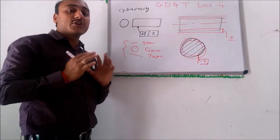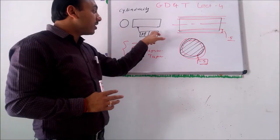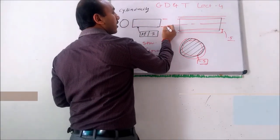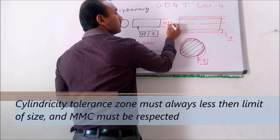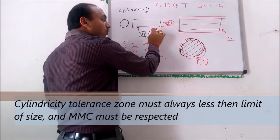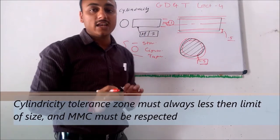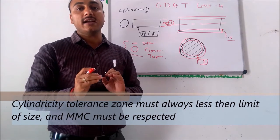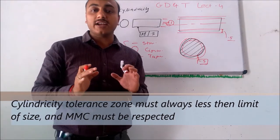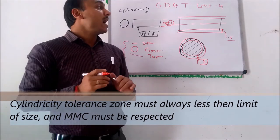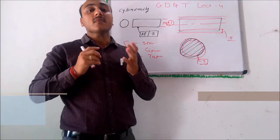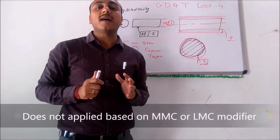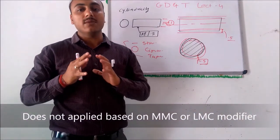Remember that in circularity or cylindricity, the tolerance zone should always be less than the size tolerance value, because MMC is respected and it should not violate Rule 1 in GD&T. Another important thing: circularity and cylindricity do not apply with modifiers — that is, MMC modifier or LMC modifier cannot be used with them.